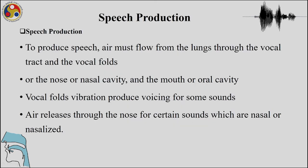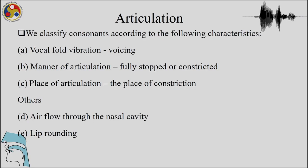Coming back to speech production: to produce speech, air must flow out from the lungs through the vocal tract and the vocal folds. It can also come out through the nasal cavity. The vocal folds vibrate for the production of voiced sounds, and air releases through the nose for nasal sounds. The three important things in articulation are place of articulation, manner of articulation, and vocal fold voicing.